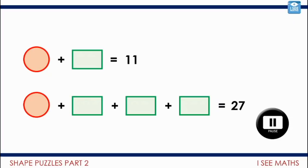Okay, let's have a look. Well, you can see they've both got this circle and this rectangle. Here, we've got two extra rectangles and the answer increases from 11 to 27. It gets 16 more.